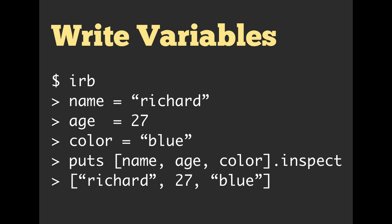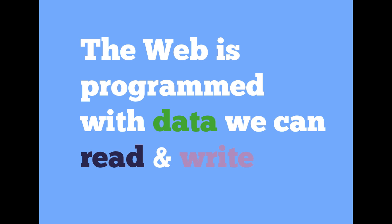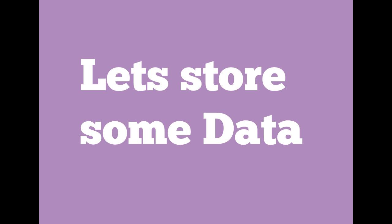At its core, programming is dealing with state and rearranging that state. It saves the state of the string 'Richard' in a variable named 'name', and saves the integer 27 in a variable named 'age'. When you couple this with flow control — Boolean logic, case statements, if-then, as well as loops like while loops or in Ruby looping over arrays — it becomes very powerful. Those things seem relatively trivial but you can do quite a bit with them. We'll be going into more depth and detail about Ruby. The web is programmed with data that we can read and write.